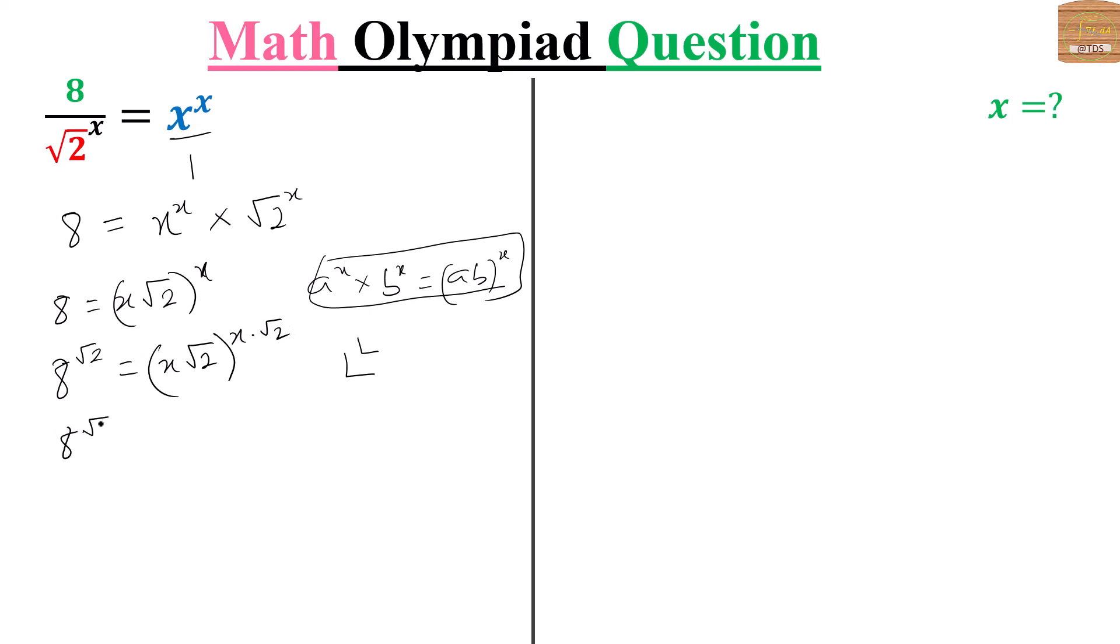Which would mean root 2 times root 2 equals x root 2 to the exponent x root 2. So we have the right hand side to be base and exponent being equal.